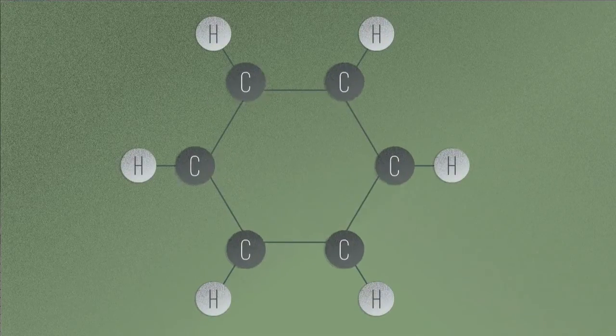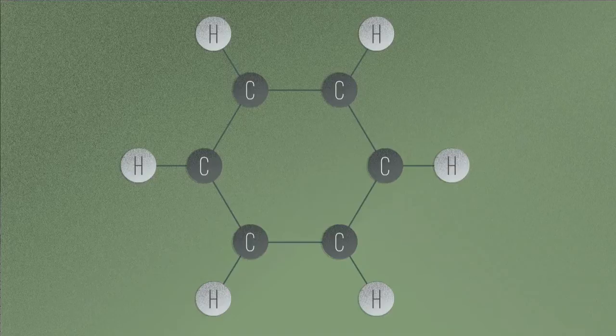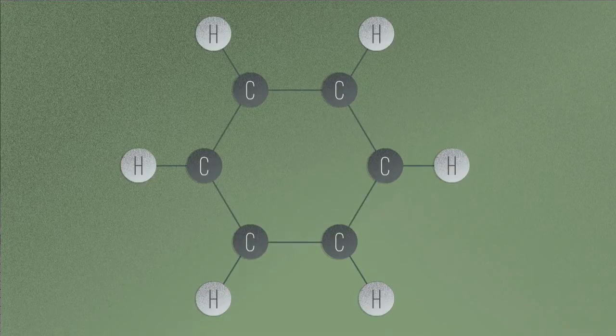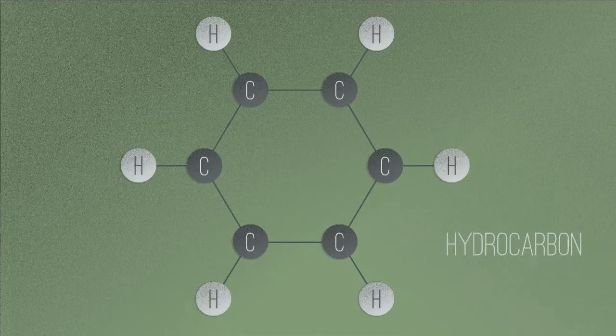On an atomic level, benzene is made up of six carbon atoms covalently bonded in a ring. Each carbon is also covalently bonded to one hydrogen. This makes it a hydrocarbon.